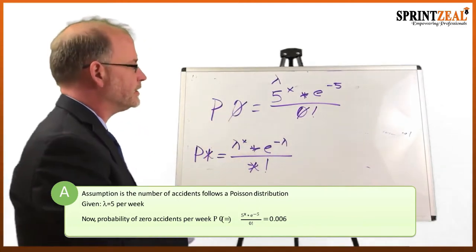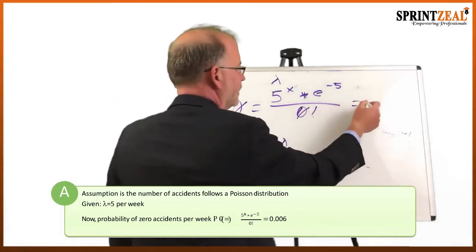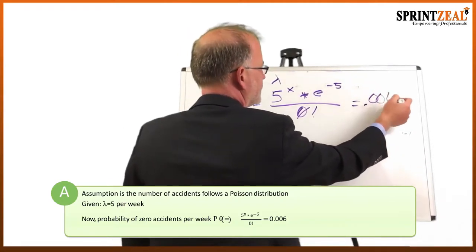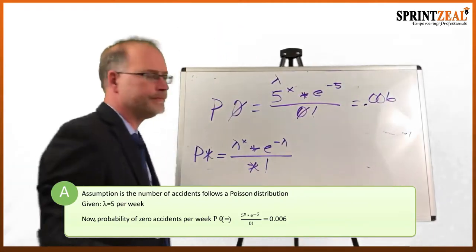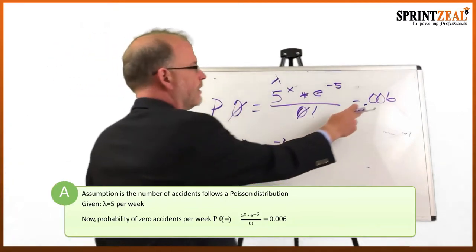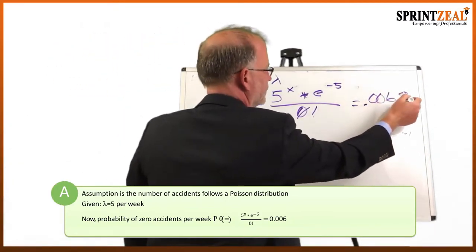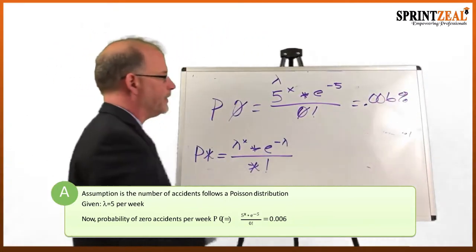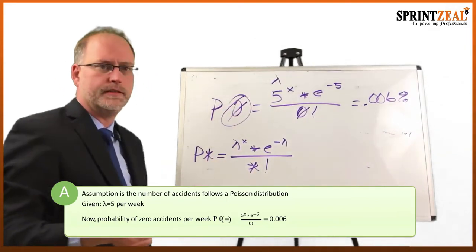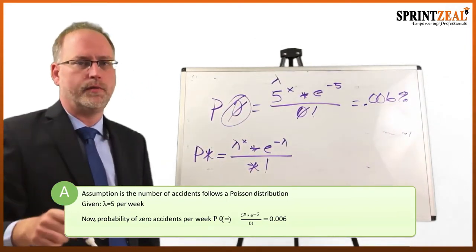We type this into a graphing calculator and that's going to be 0.006. So there's a 0.6% probability that zero accidents will happen per week.